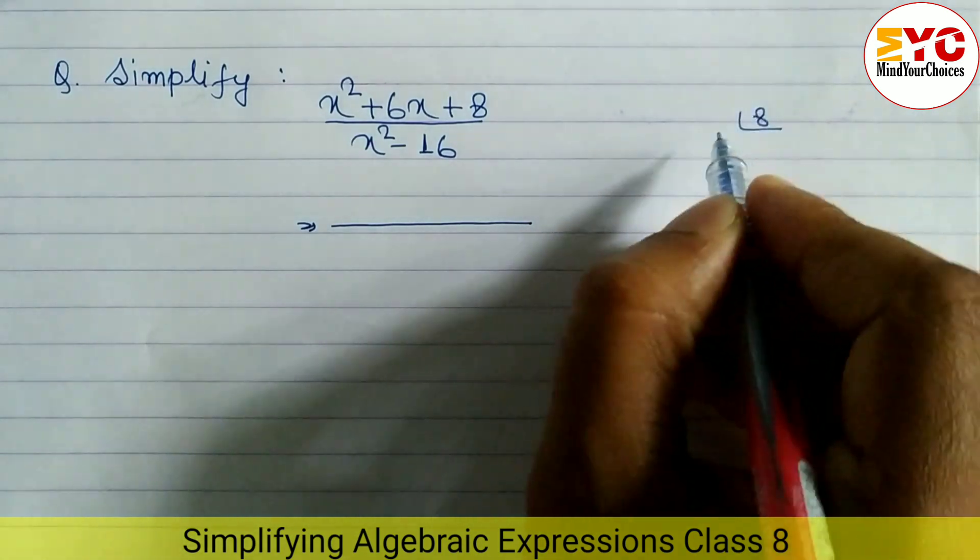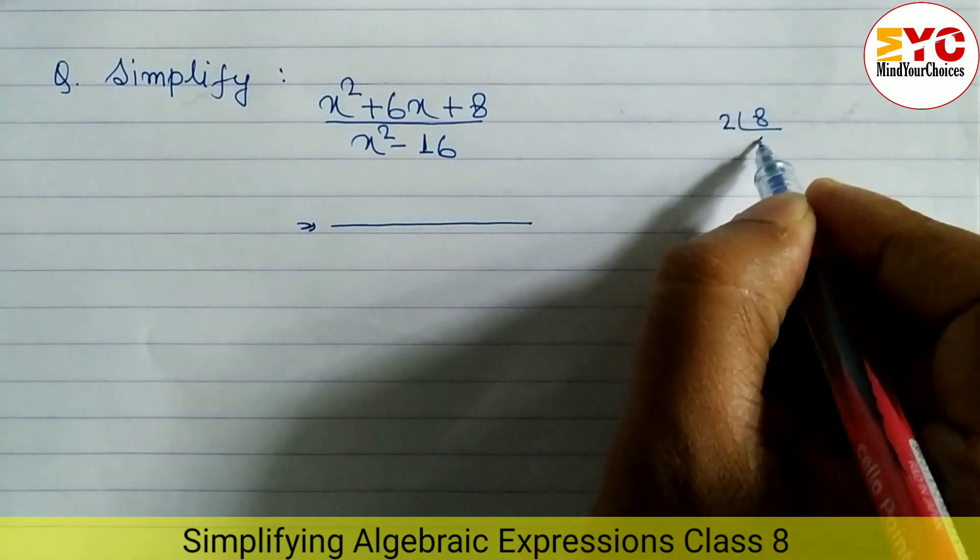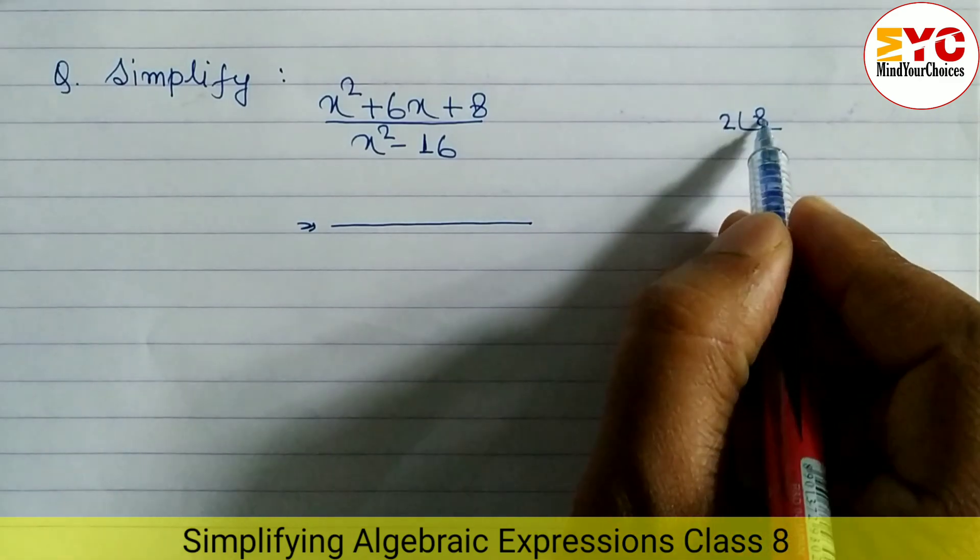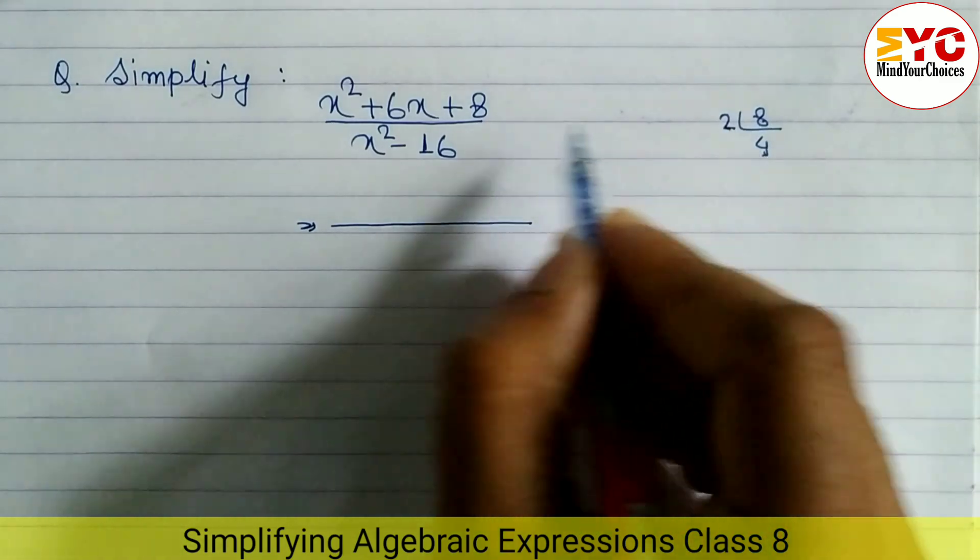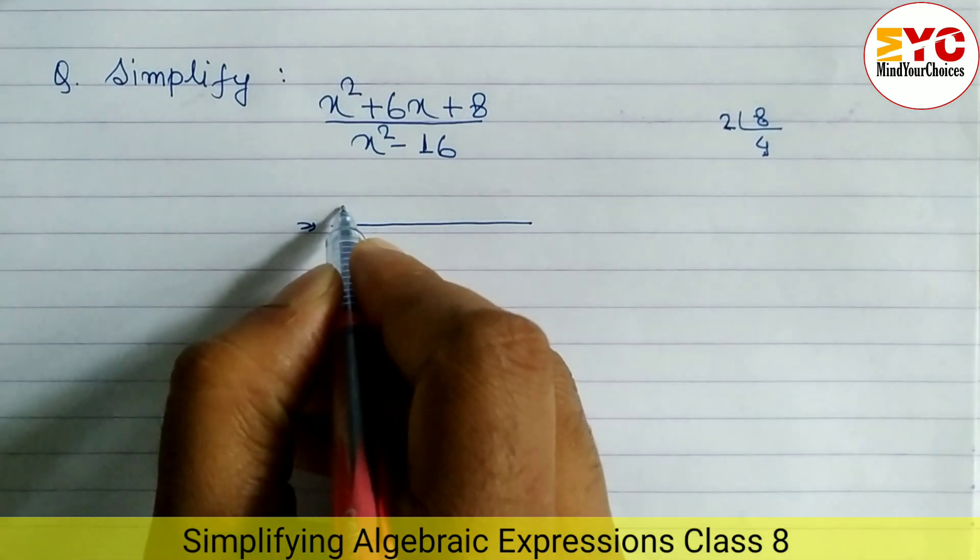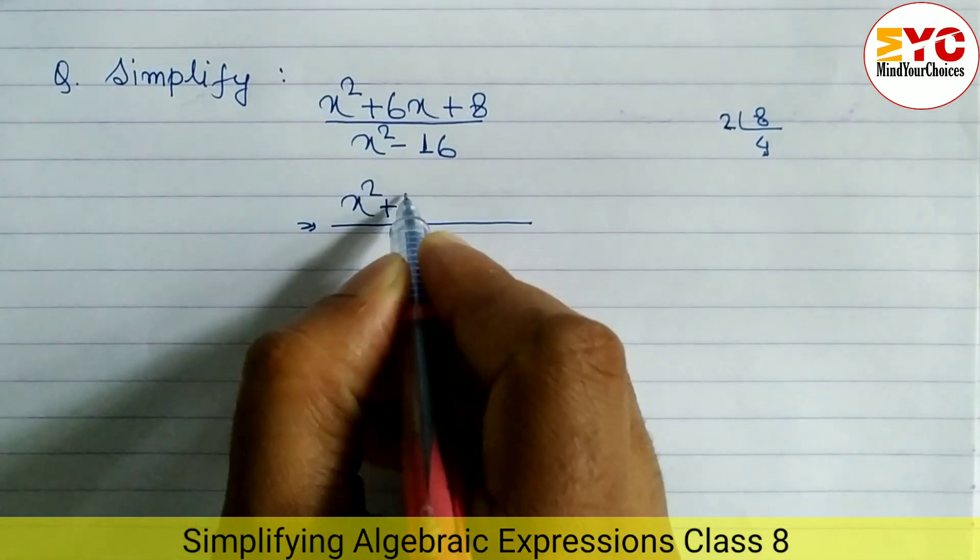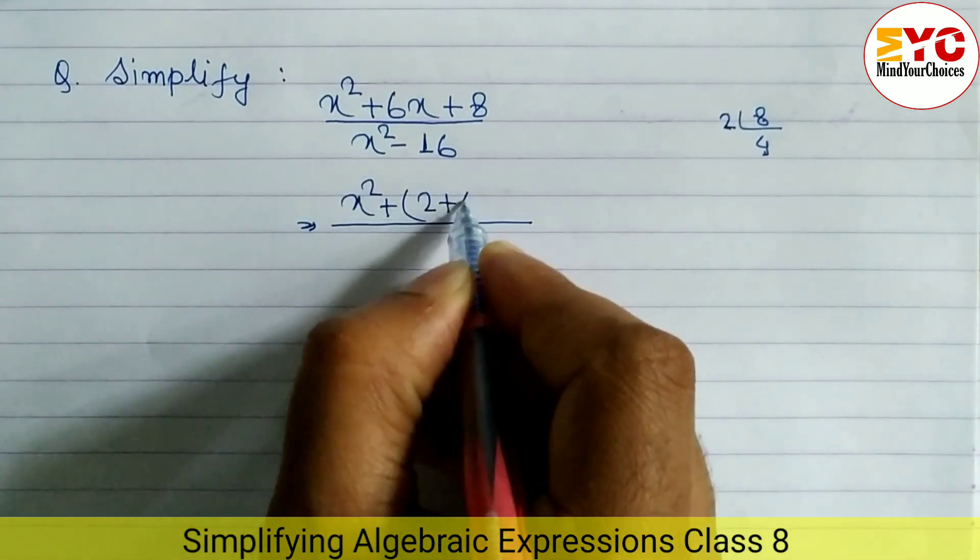What are the factors? If you don't know you can do like this: write down 8 and find out the factors. 2 times 4 is 8, and when you add 2 plus 4, you get 6. So what are the factors? 2 and 4. So we can write here x² + (2+4)x + 8.